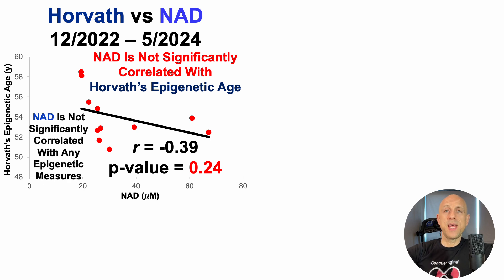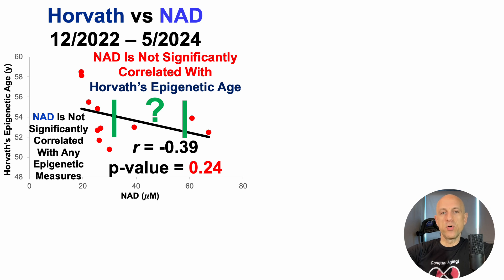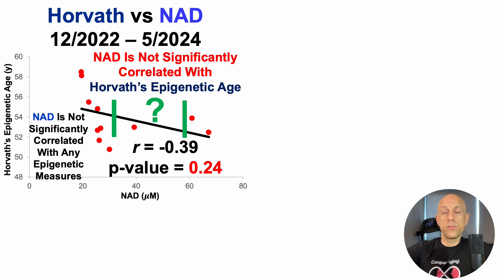From these three epigenetic measures — telomere length, DunedinPACE, and Horvath — we can see that through 11 tests, NAD is not significantly correlated with any of them. As a weakness or limitation, note that I only have one data point for NAD levels in the 30–60 micromolar range. Most of my data is less than 30 micromolar, and I've got two data points greater than 60 micromolar. The plan is to slowly increase my nicotinic acid supplementation to generate more NAD data across a spread from 20 to 60-plus micromolar.